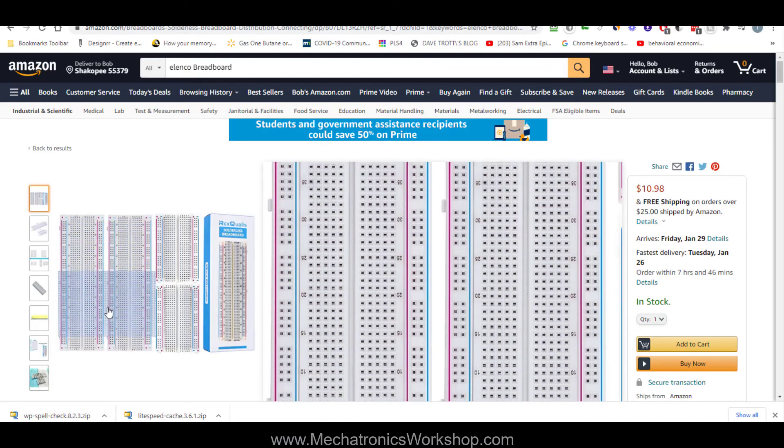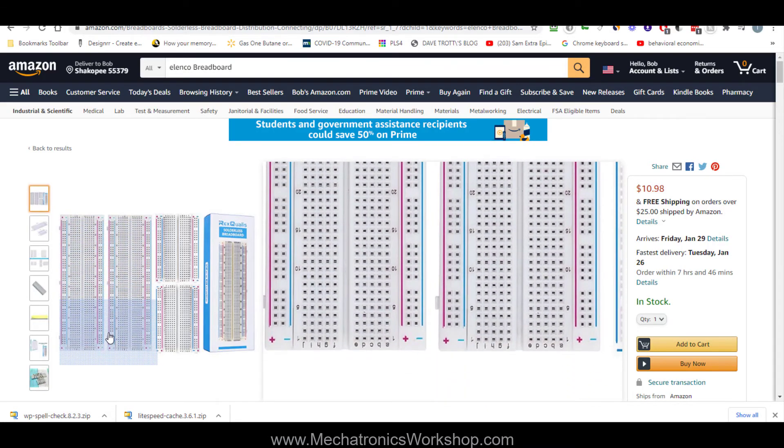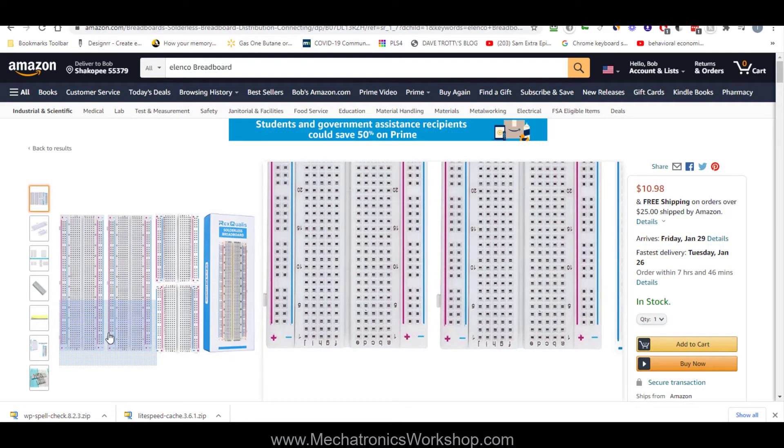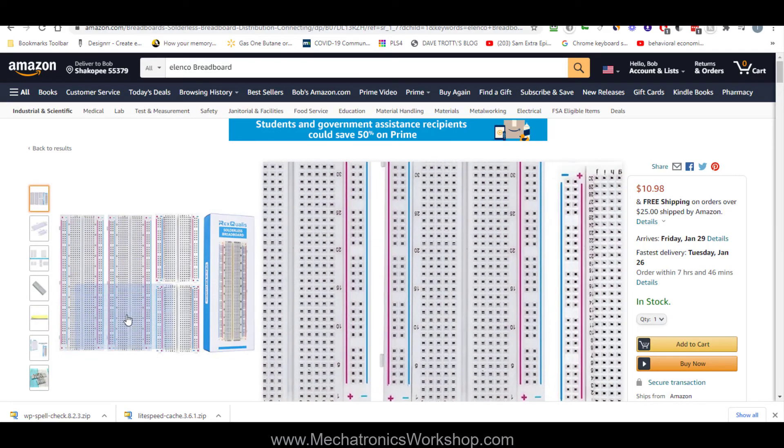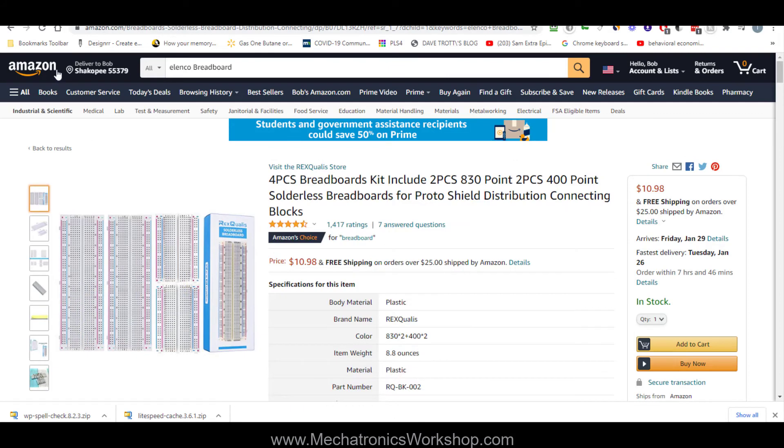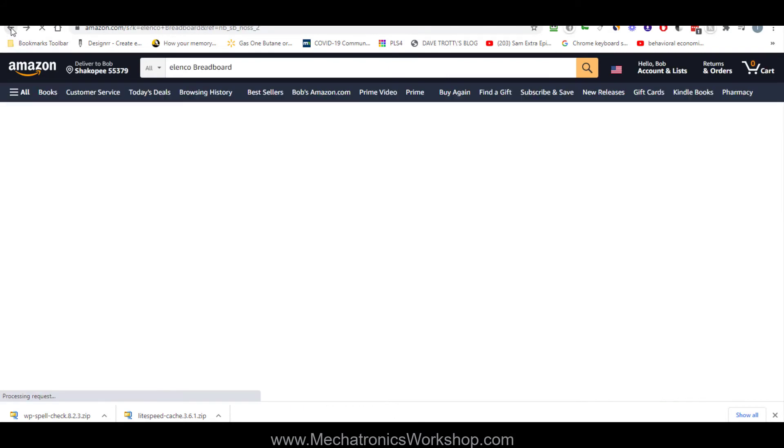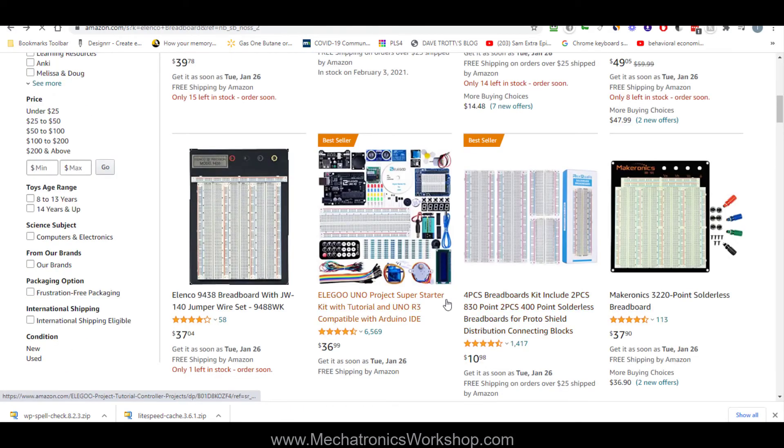Let's see if the A, B, C, D, E is the same top and bottom, and it is. So those are pretty good indicators that this is going to be a good board and not a cheap Chinese knockoff. Okay, so the Elenco brand is good. So you could search Amazon and you could pick whatever turns you on.